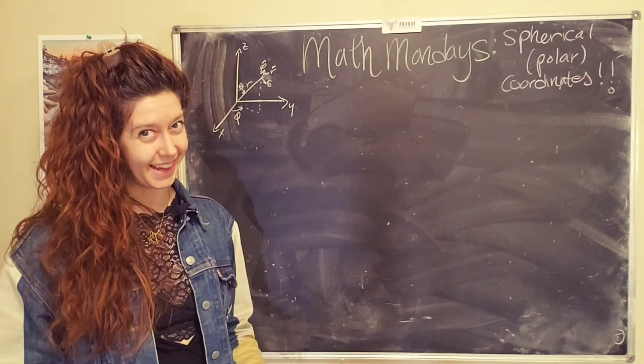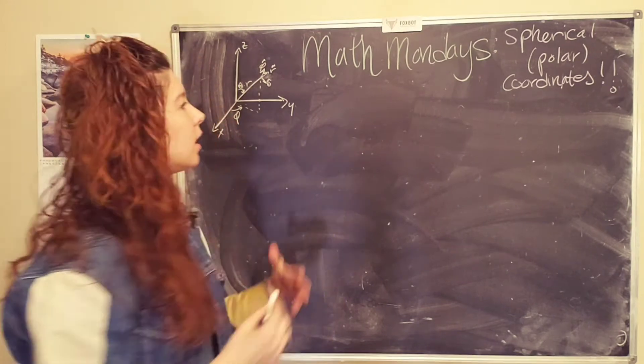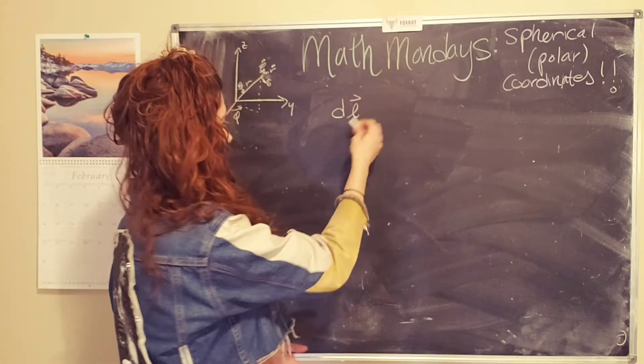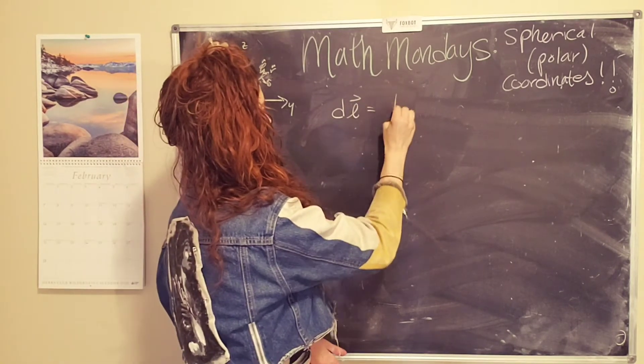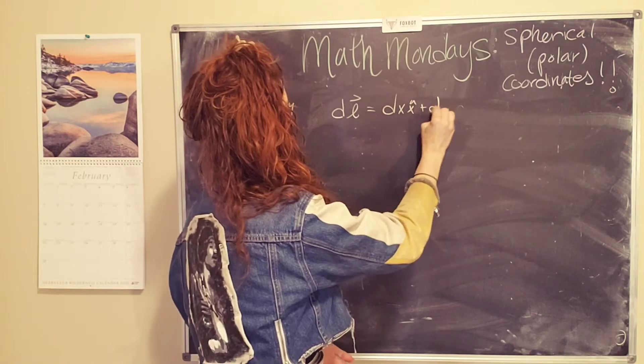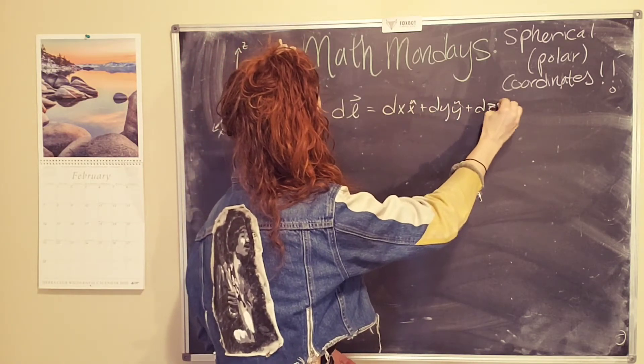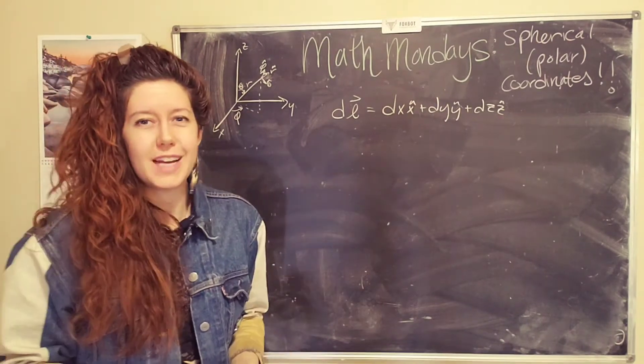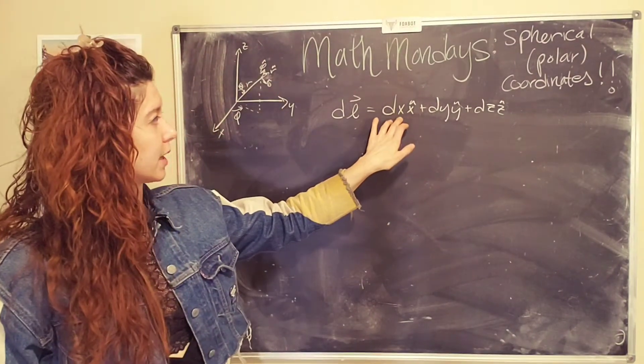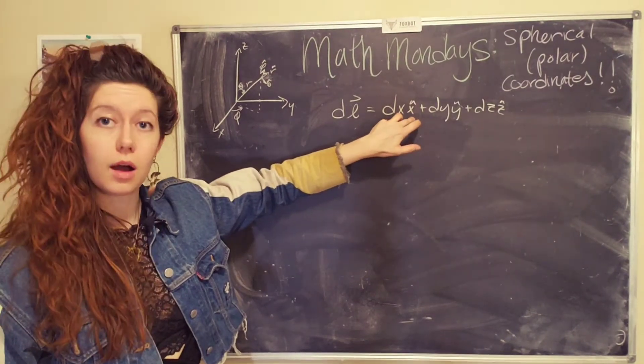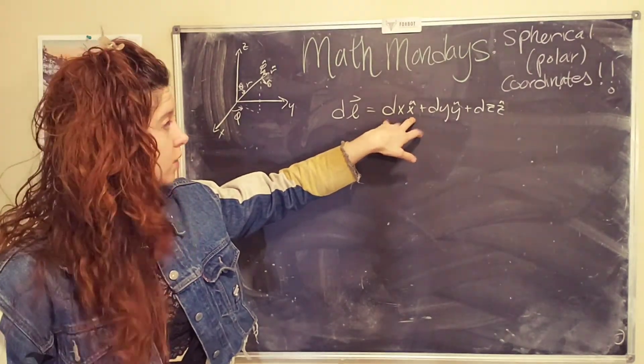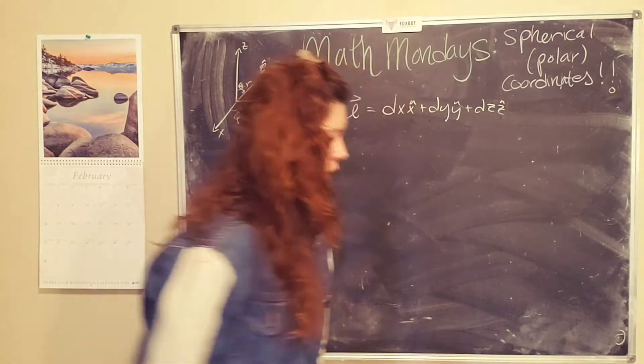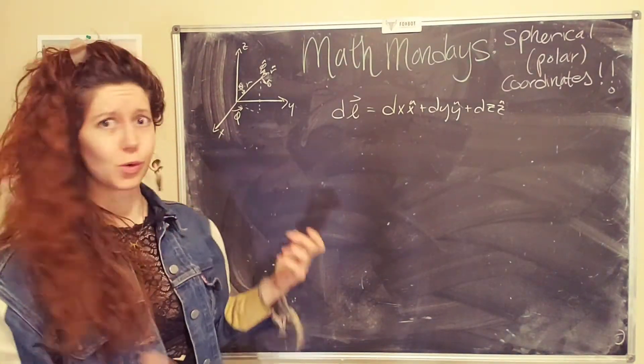So again, keep in mind that these change as your vector changes. It's kind of like you have a little chair on the top of the vector. And as the vector moves around, you're looking at space from the vector's perspective. Pretty cool. Can be really handy. Okay. But how do we translate that into doing integrals? So from the XYZ or Cartesian system, you end up with a infinitesimal displacement vector DL, which can be written like DX X hat plus DY Y hat plus DZ Z hat.